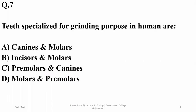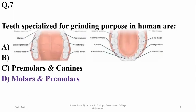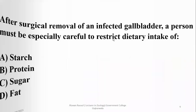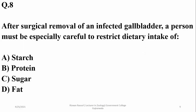Teeth specialized for grinding purposes in humans — grinding is a function of premolars as well as molars, so delta is the suitable option. Canines are specialized for tearing purposes, and incisors are for holding food in your mouth.